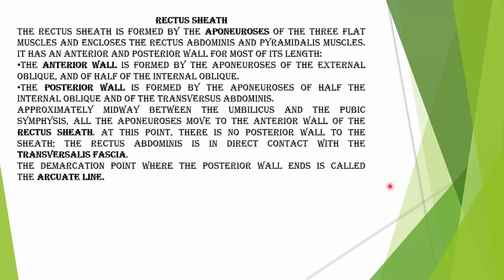The rectus sheath is an aponeurosis formed by the three flat muscles — external oblique, internal oblique, and transversus abdominis — and encloses the rectus abdominis and pyramidalis muscles. It has an anterior and posterior wall for most of its length. The anterior wall is formed by the aponeurosis of the external oblique and half of the internal oblique. The posterior wall is formed by the aponeurosis of the other half of the internal oblique and transversus abdominis. The demarcation point of the posterior wall is called the arcuate line.